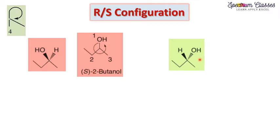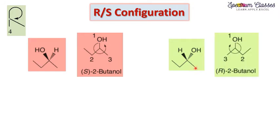Now if we consider the second molecule where we have interchanged the position of OH to the other side — on one interchange we change the configuration. If one was S, let us see what the other will be. The fourth priority group is now on the solid wedge.